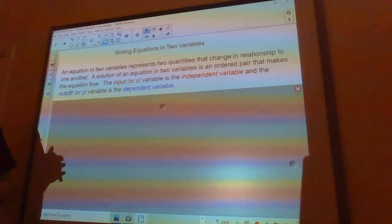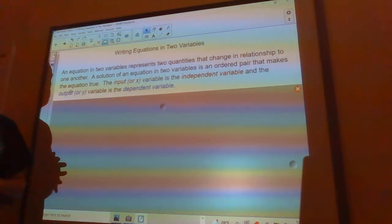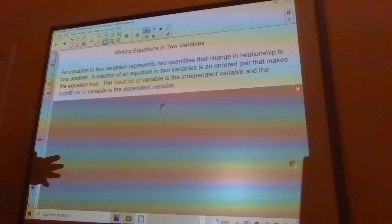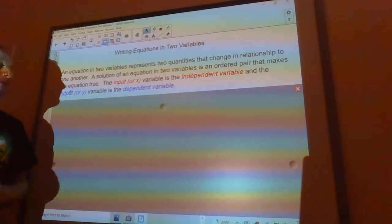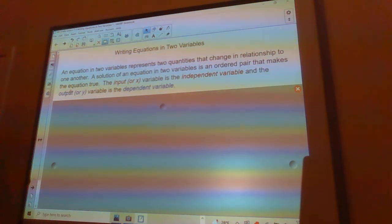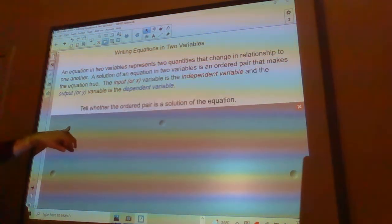A solution of an equation that has two variables is an ordered pair that makes the equation true. You have an input, or an x variable, and that's the independent variable, and you have an output, or a y variable, that is the dependent variable.